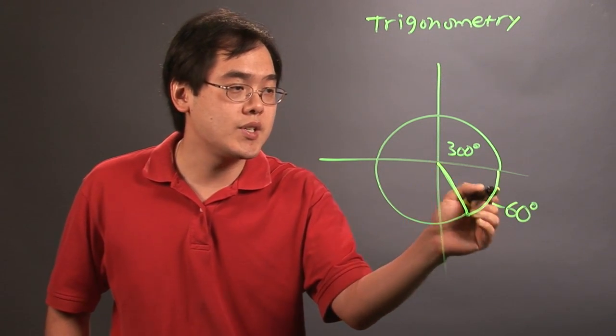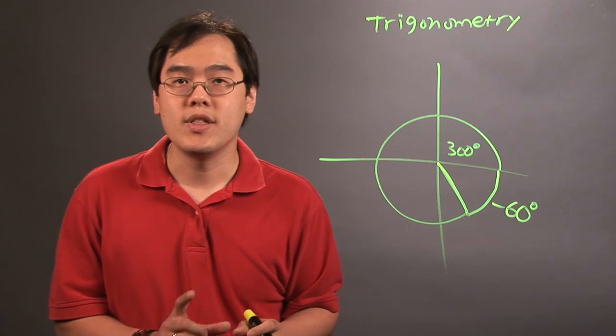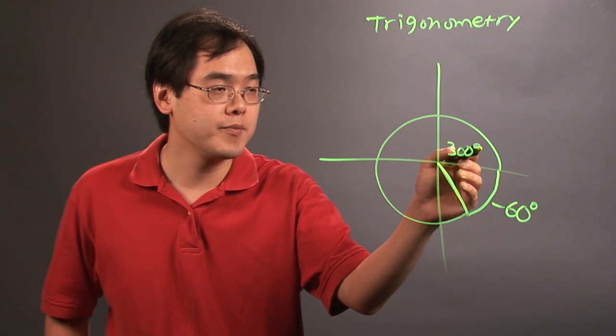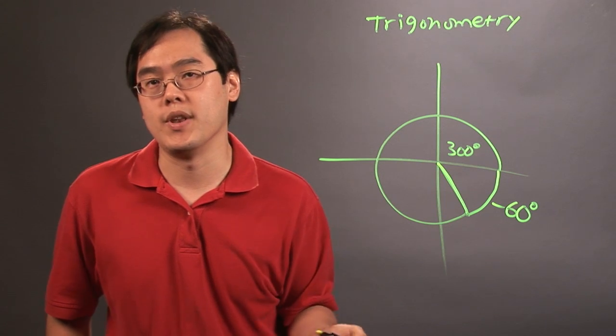Now, 300 degrees and negative 60 degrees have the same terminal position, even though they're not technically considered the same angle. But that's one way that you can make a positive number turn into a negative number.